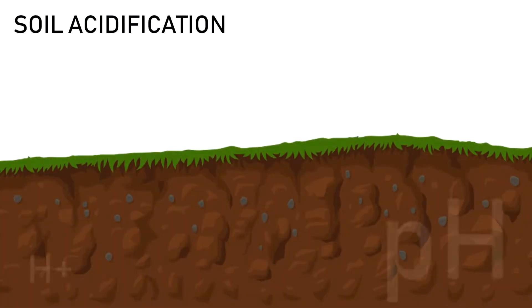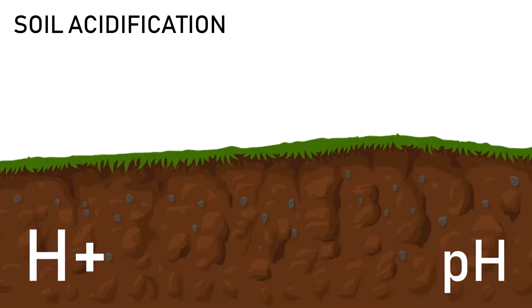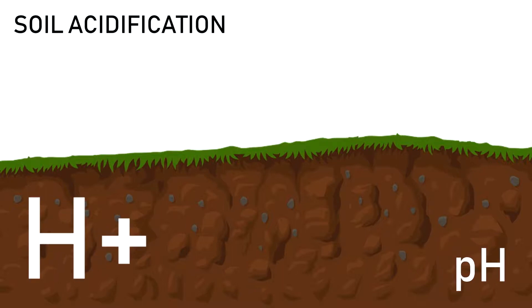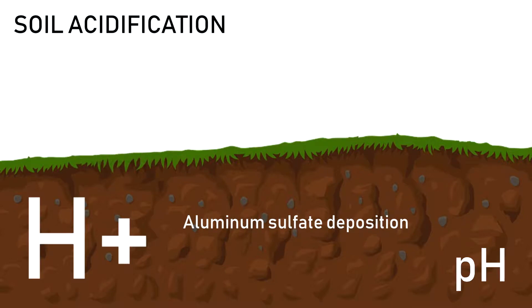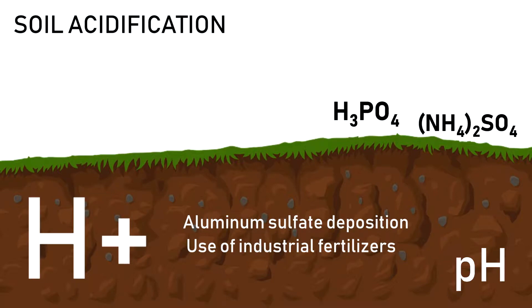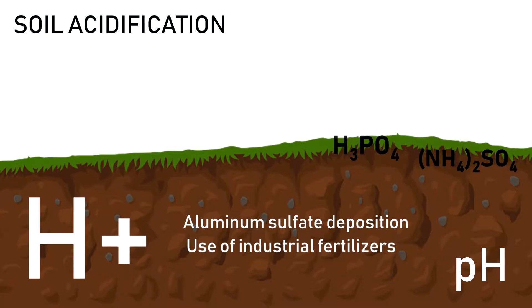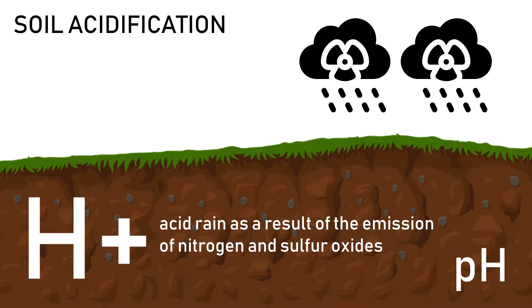In the case of the soil, the absorption of hydrogen cations causes the decrease in its pH. This can be due, on the one hand, to the deposition of different compounds such as aluminum sulfate, which is a salt used in industry, or the use of industrial fertilizers such as ammonium sulfate or phosphoric acid, and on the other hand, to acid rain as a result of the emission of nitrogen oxides and sulfur into the atmosphere.